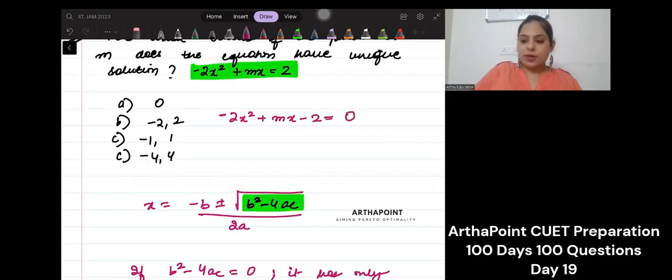So what is b squared? b squared is this, right? So b squared is m squared minus 4. What is your a? a is this minus 2. What is your c? c is this minus 2.